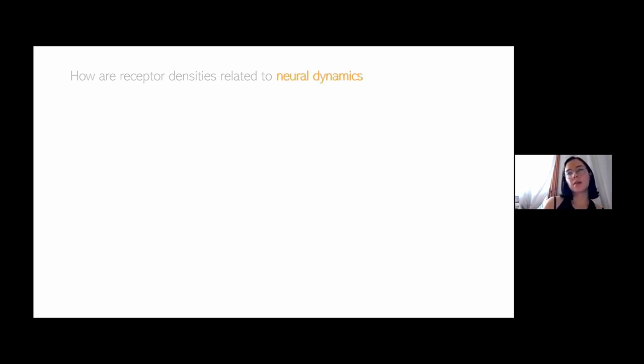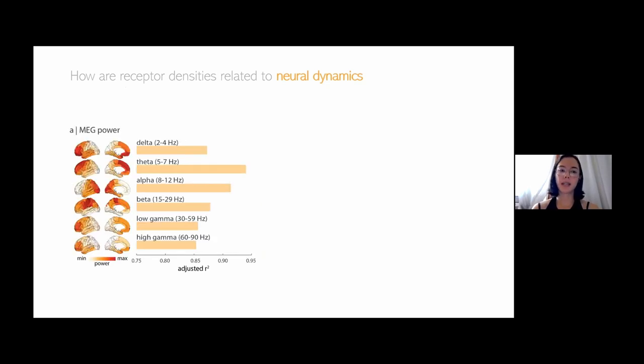The second question is about neural dynamics. I kind of already touched on neural dynamics with the functional connectivity, but I'm going to take it a step further and look at MEG data. This is MEG data coming from the Human Connectome Project. We looked at the power distributions of six different frequency bands across the brain.